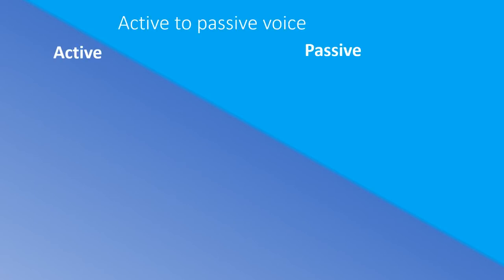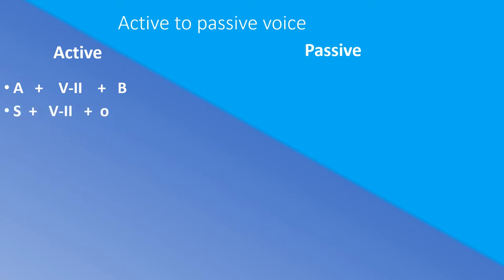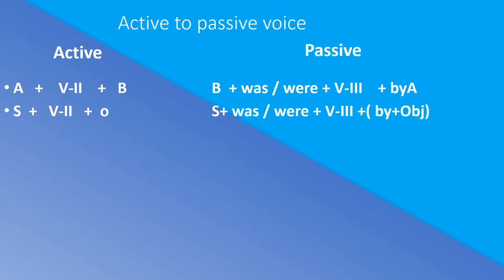Now, changing sentences from active to passive. In active voice: Subject (A) + verb in the second form + object (B). In passive voice: subject and object swap — object becomes subject and subject becomes object. The formula becomes: B + was/were + verb in the third form + by + A. So: Subject was/were + verb in the third form + by + object.